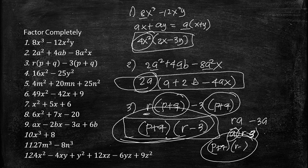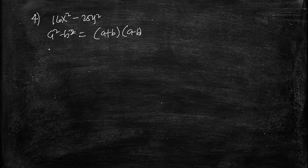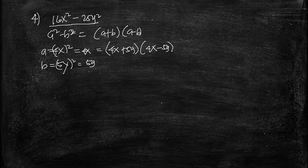Number 4 is 16x² − 25y². This is in the form a² − b² = (a + b)(a − b). Here a = √(16x²) = 4x, and b = √(25y²) = 5y. So the factored form is (4x + 5y)(4x − 5y).